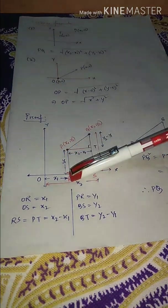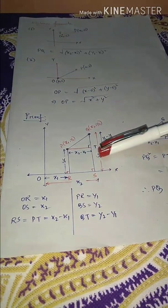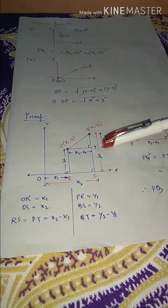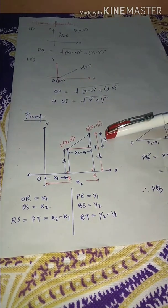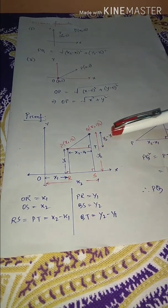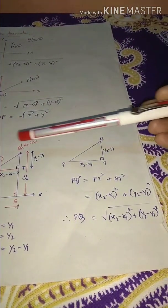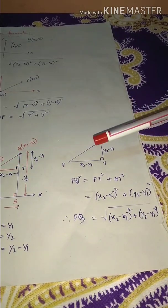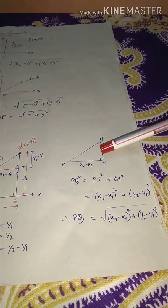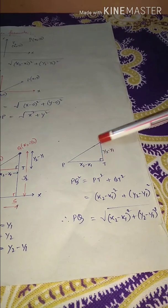For the vertical distance QT: the total length QS is Y₂ and PR = TS = Y₁, so QT = Y₂ − Y₁. Now, triangle QPT is a right-angle triangle, where PQ is the hypotenuse, PT is the base, and QT is the perpendicular. We apply the Pythagorean theorem: PQ² = PT² + QT².